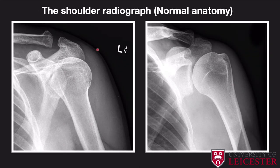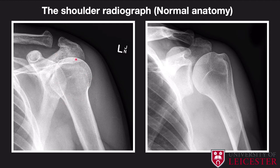One important thing to cover is how the humerus looks when it's internally or externally rotated. Here, compared to the normal neutral position, we've got an internally rotated humerus. You can identify the lesser tuberosity, the greater tuberosity, and the bicipital groove. Classically, this appearance resembles a light bulb. If you see this appearance, you've got to question: has the patient taken the image with internal rotation, or is there suspicion for a posterior shoulder dislocation? That's quite an important thing to bear in mind.